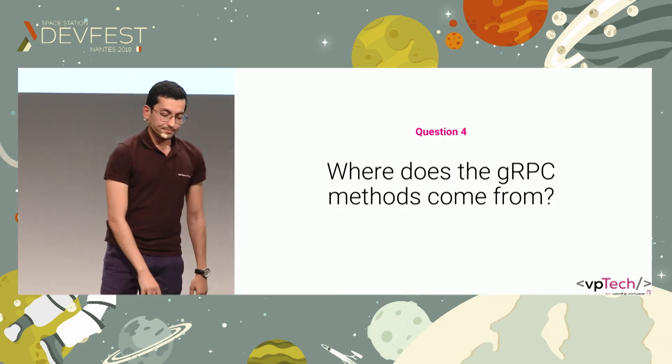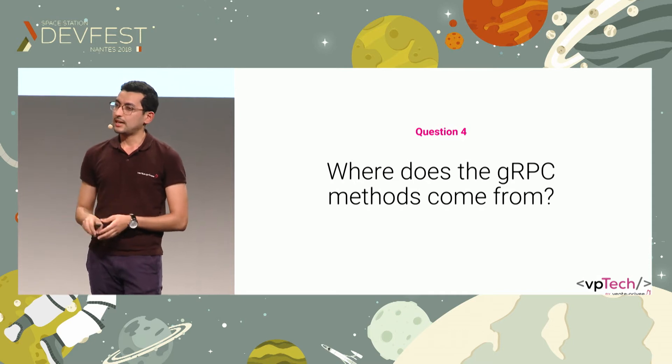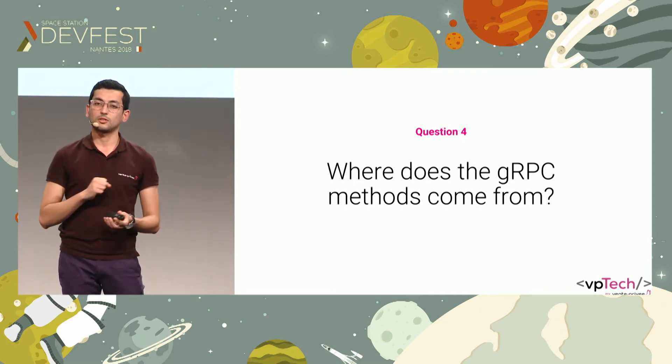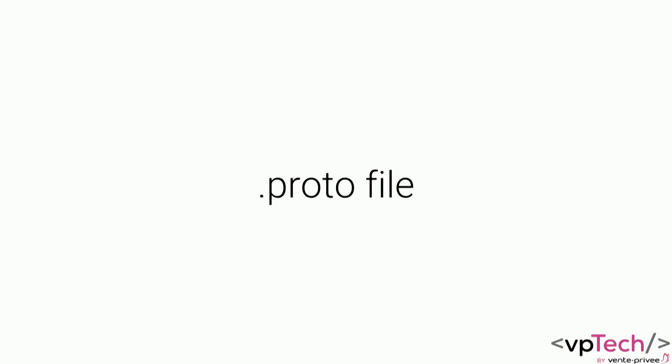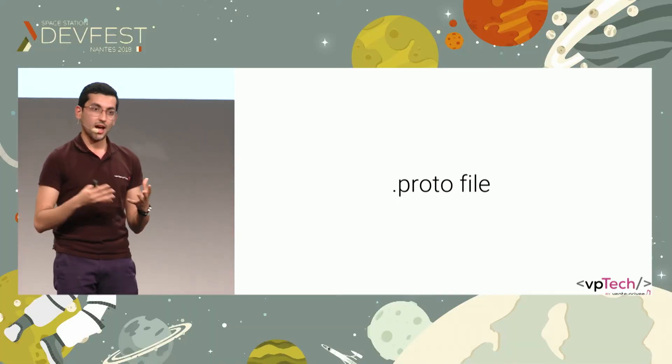We've seen how gRPC communicates and how it operates — just call the method. But where does that method come from? Actually, the most important part when working with gRPC is the proto file. It's where you define all your services. You can think of the proto file as a contract that will enforce the communication between your app and the server.